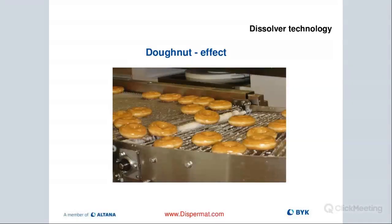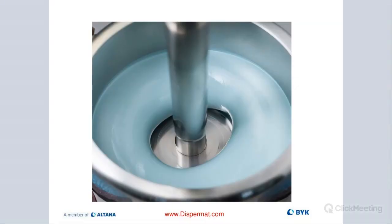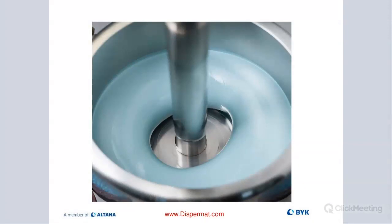We have something called the donut effect — and it's really called that. When you look inside of the container and you optimize the dispersion process at 18 to 25 meters per second, with a really good viscosity range, you should see something like a donut shape. When you see that, you already know it's very likely that you're optimizing the process and things are getting properly dispersed. That is called the donut effect, and it's really desirable in the pre-dispersion process.